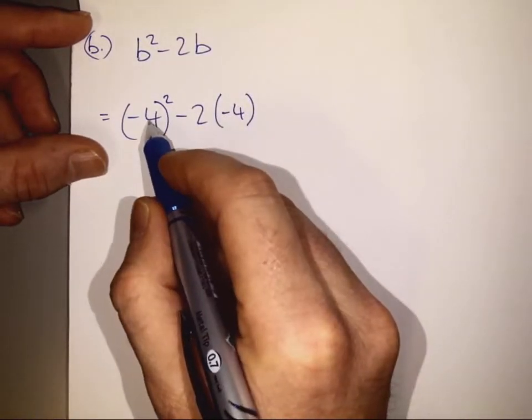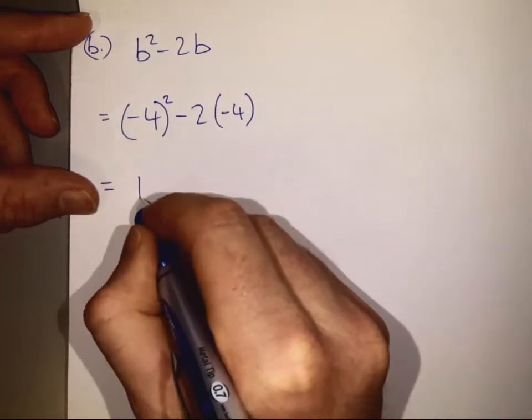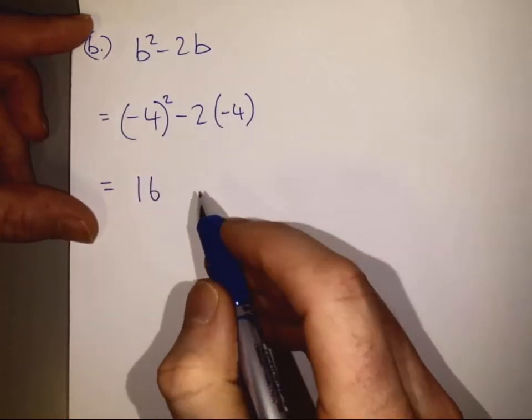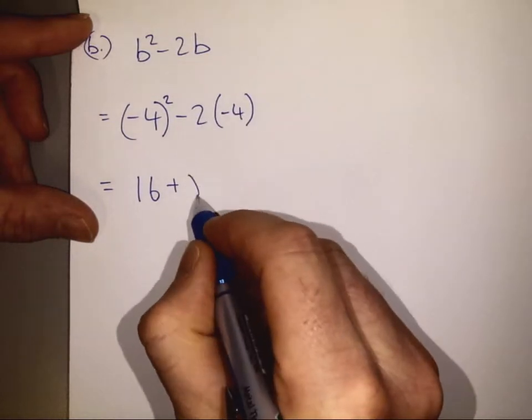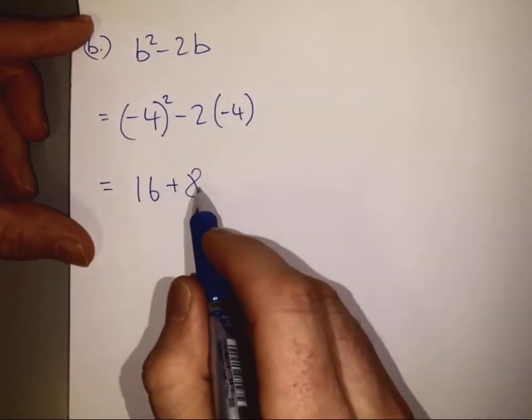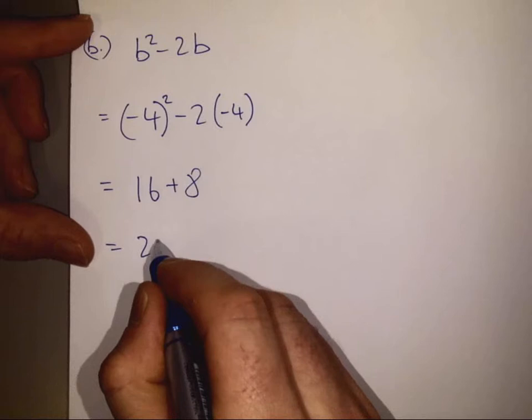Now minus 4 squared is going to be plus 16. And a minus by a minus gives us a plus there, and 2 4s are 8. 16 plus 8 is 24.